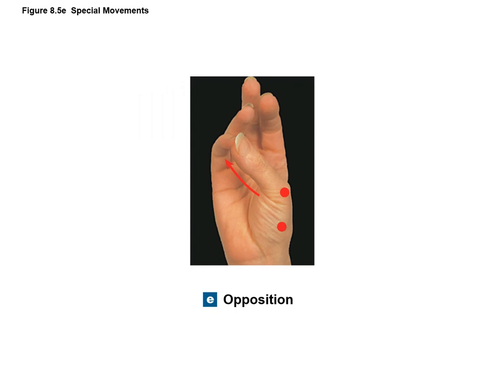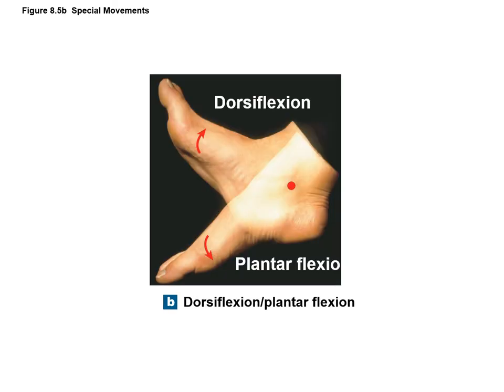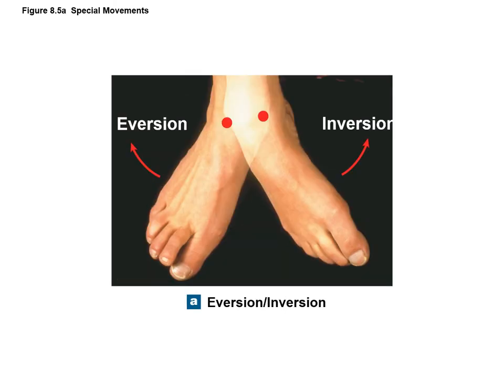Opposition is unique to the thumb and fingers—pinching the thumb and fingertips together, hence the term opposable thumb. Plantar and dorsiflexion happen at the foot: plantar flexion is pointing the toes downward or tiptoeing. Dorsiflexion is pulling the toes upwards towards the shin. Eversion is twisting the foot to face the sole outward, and inversion is twisting the foot to face the sole inward.